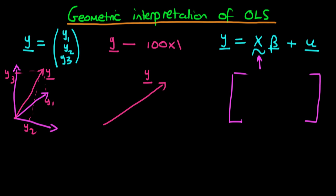Typically when we're dealing with OLS, the first column just contains ones, because we're typically talking about having a constant in our model. Then the second column might represent the values of a variable x1 — so we have x11 as its first value for the first person, then the second value of x1 for the second person, then the third value, and the fourth value respectively.